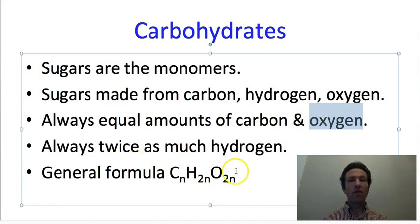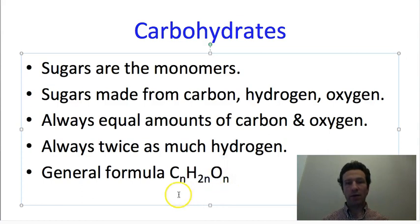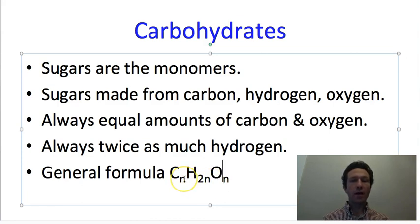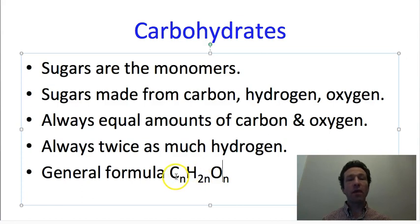The general formula for any carbohydrate follows this pattern: if n is the number of carbons, we always have the same number of oxygens. For example, n equals 6 would be common for glucose — that gives us 6 carbons, 6 oxygens, and 2n equals 12 hydrogens. If n equaled 5, then we would have 5 carbons, 10 hydrogens, and 5 oxygens.